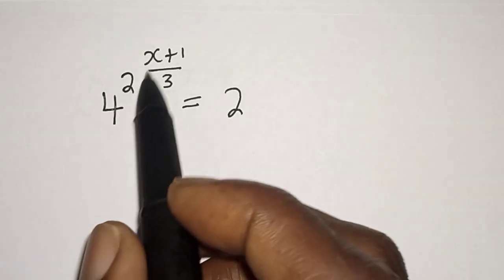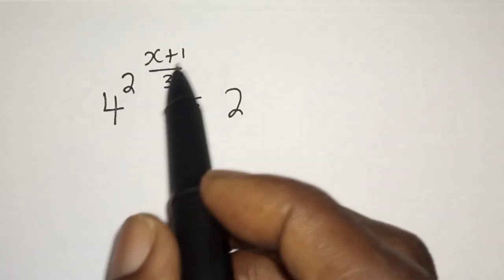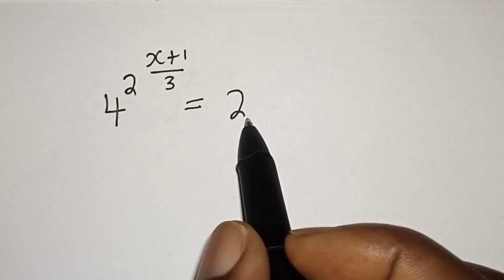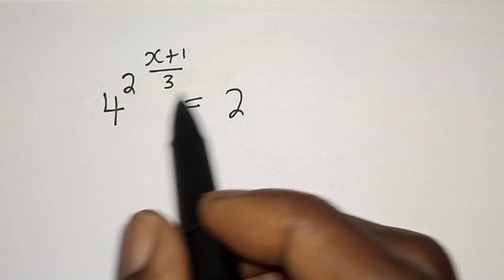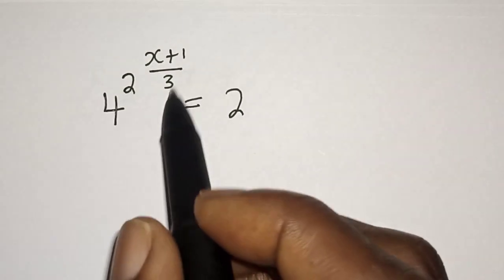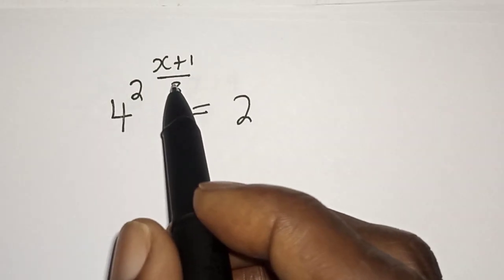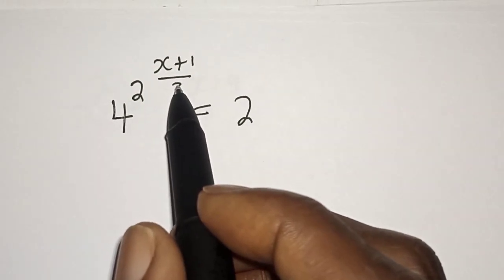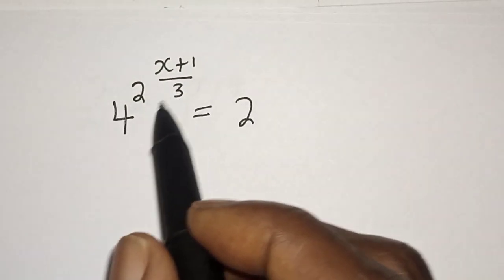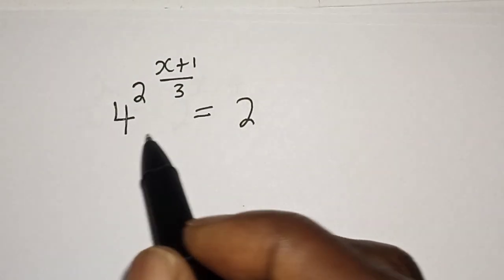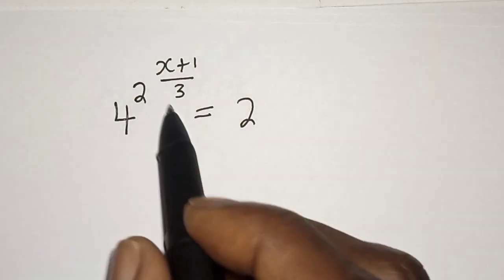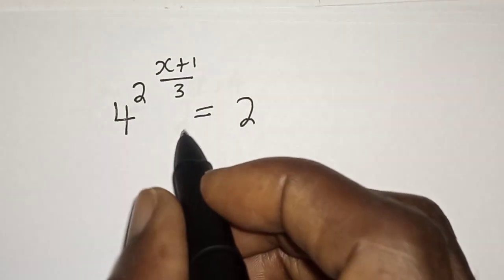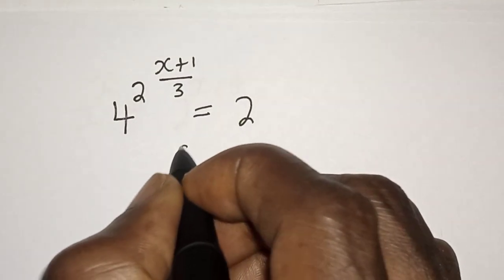4 raised to the power of 2 raised to the power of x, plus 1 over 3, is equal to 2. Hi everyone, welcome to my class. In this class, I want to find the value of x from this equation. But before we proceed, please don't forget to like, share, comment, and subscribe.